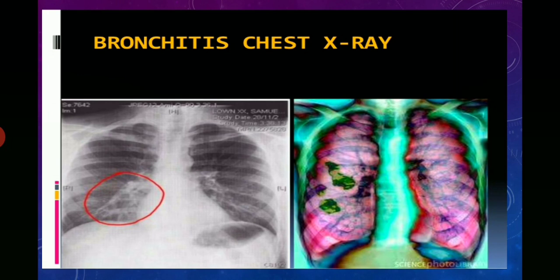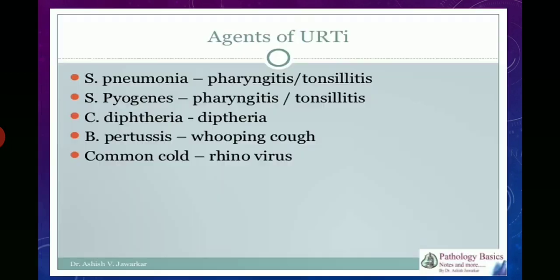In this chest X-ray you can appreciate bronchitis with inflamed bronchi. Agents of upper respiratory tract infection include Streptococcus pneumoniae, which causes pharyngitis and tonsillitis, and Corynebacterium diphtheriae, which causes diphtheria.